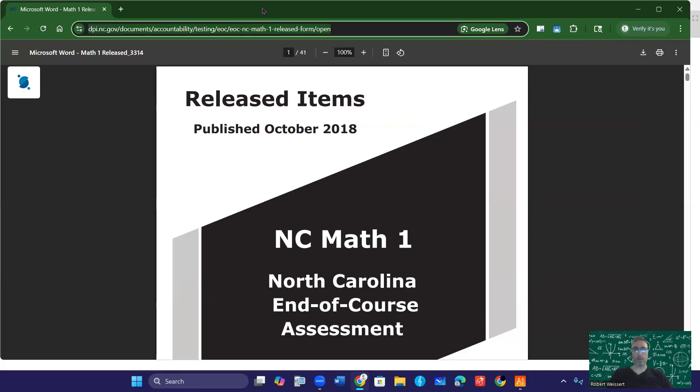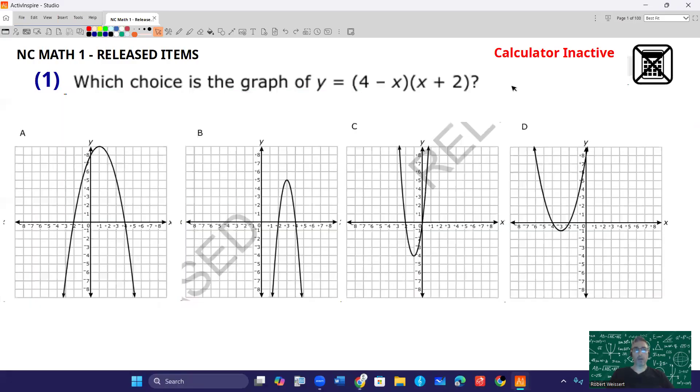Let's begin with number one. So question number one, it says which choice is the graph of y equals 4 minus x in parentheses times x plus 2 in parentheses? And there are four choices, and it looks like they're all parabolas, so they're going to be quadratic functions.